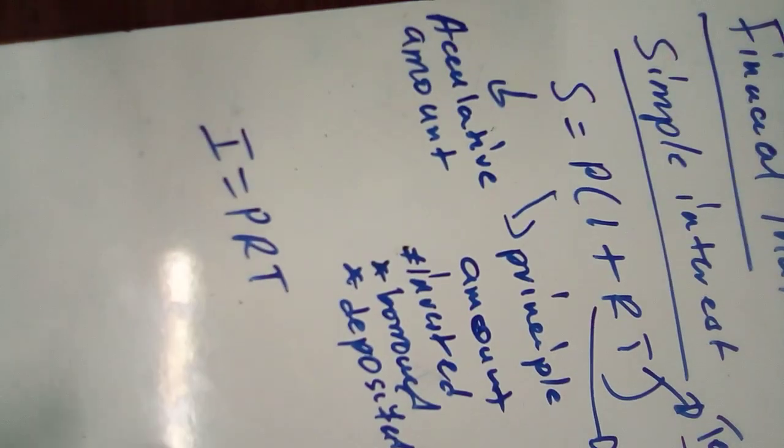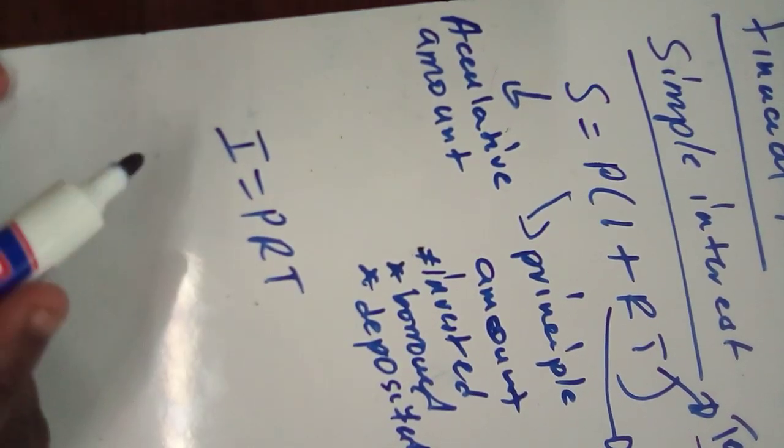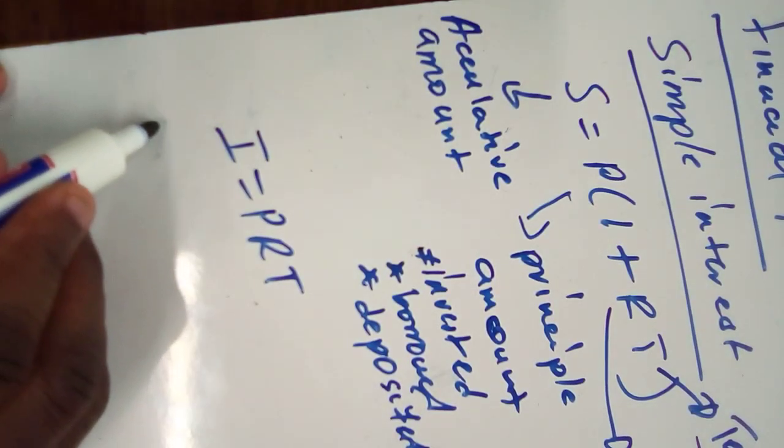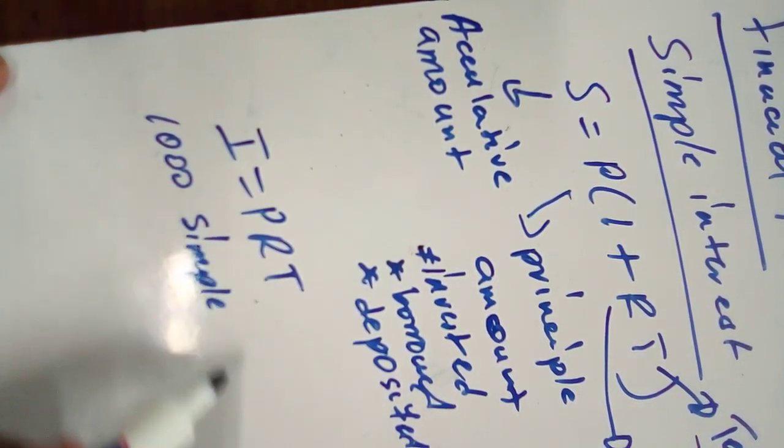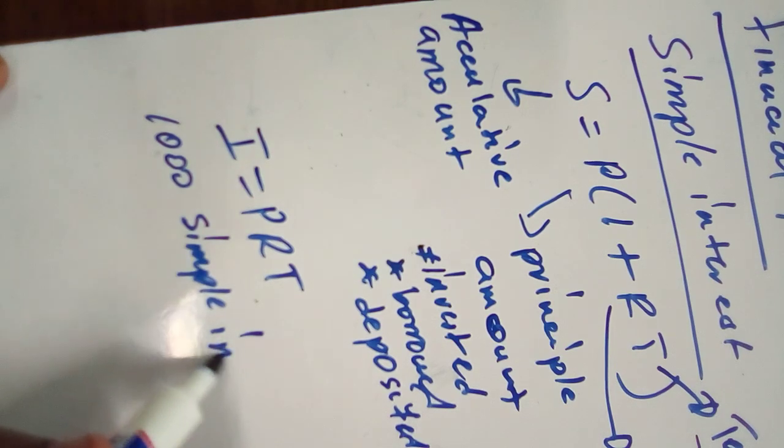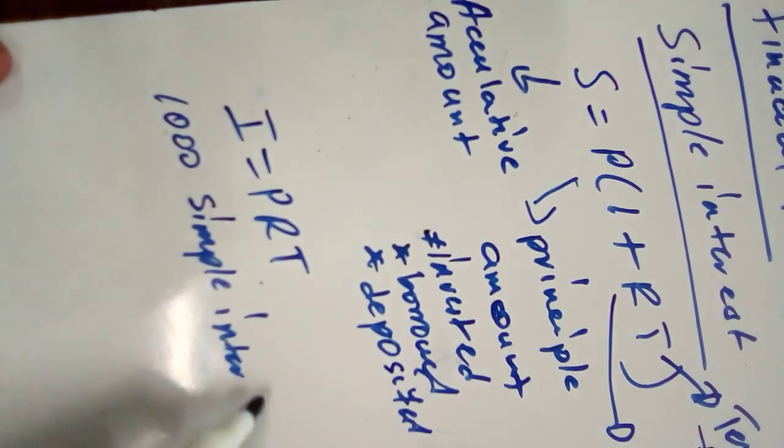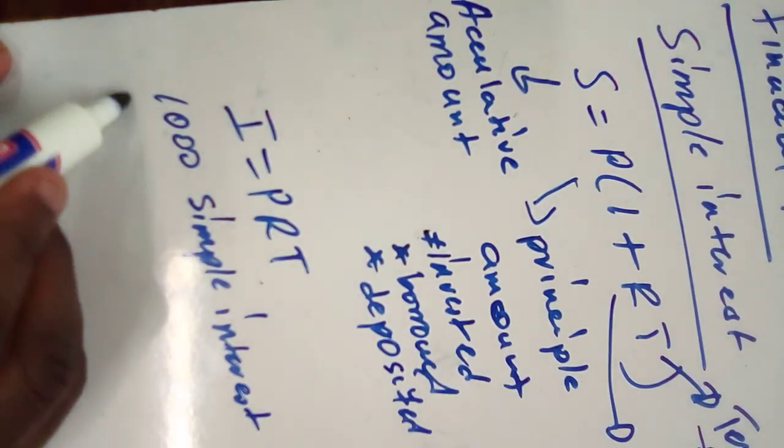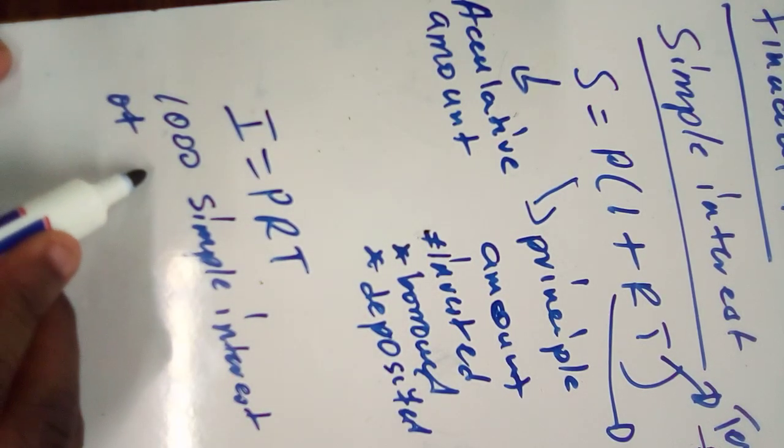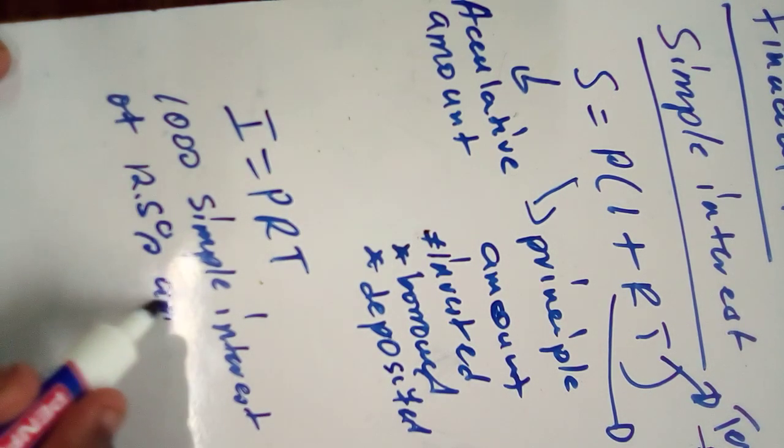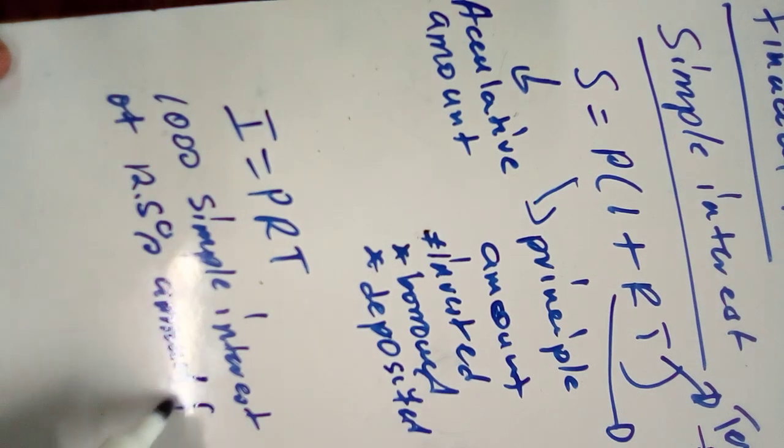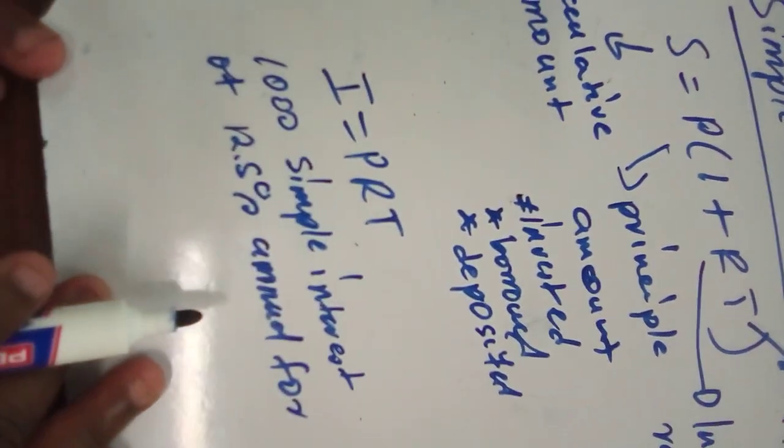So you use this one. So a question can say you are going to invest, let's say $1,000 in a simple interest for 12.5% annually for three years.